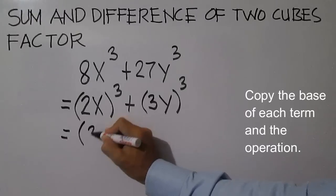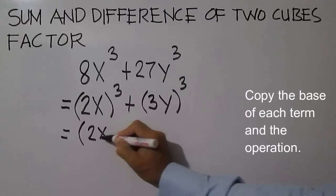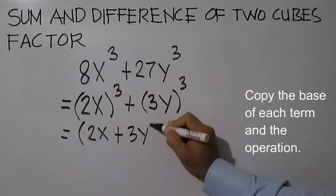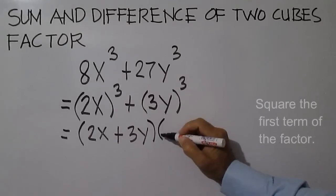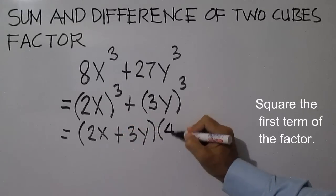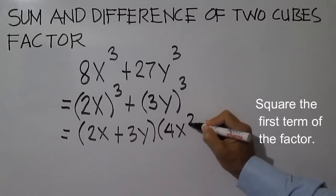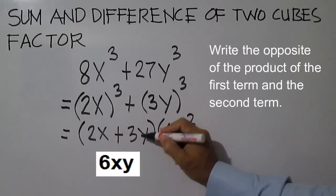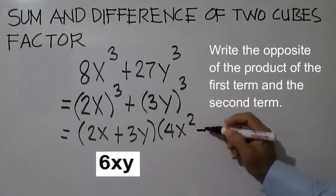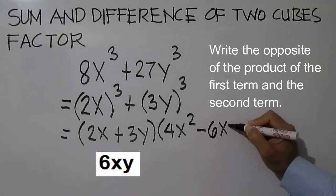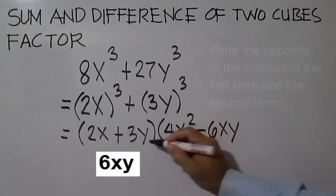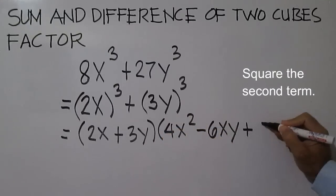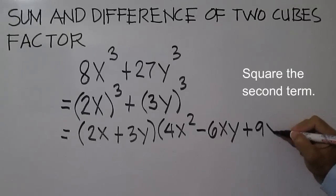Copy the base and the operation: 2x plus 3y. Then using this factor, square the first term. 2x times 2x is 4x squared. Then multiply the first and the second term. Write the opposite of the product of the first and second term. Then square the second term: 3y times 3y is 9y squared.